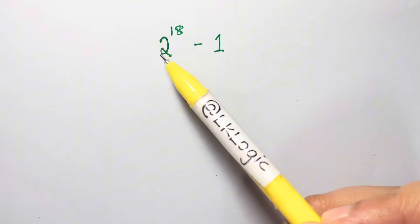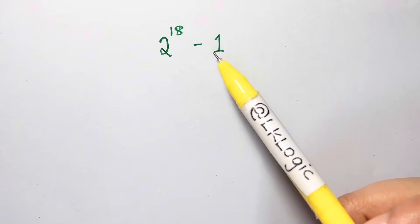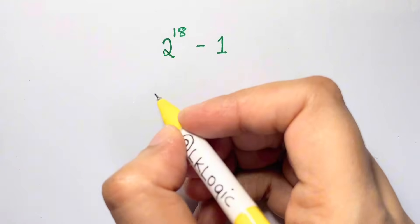Hi everyone, in this we are going to solve 2 to the power of 18 minus 1 equals what? So first of all we are going to split this.